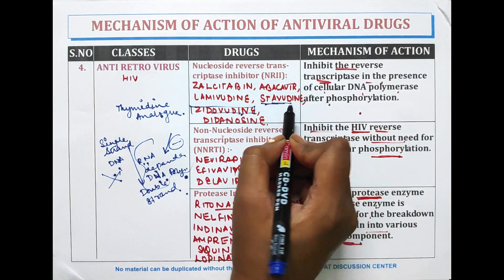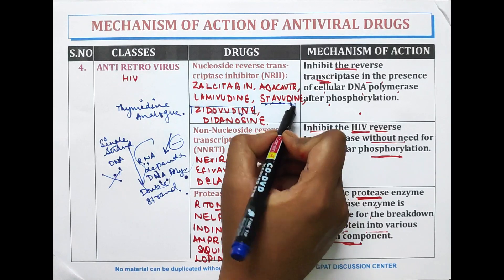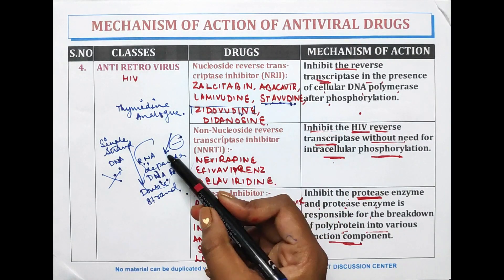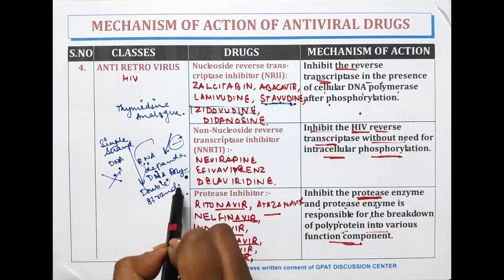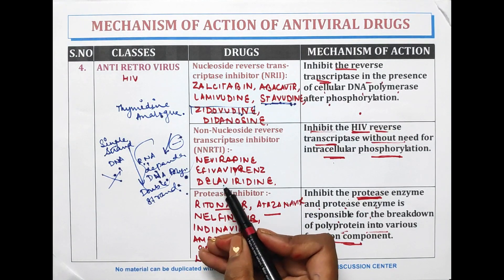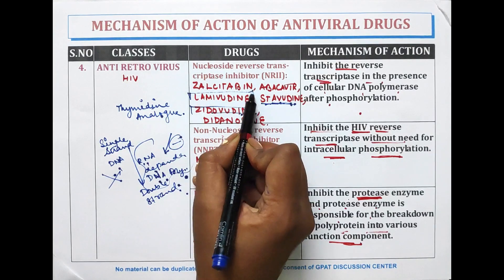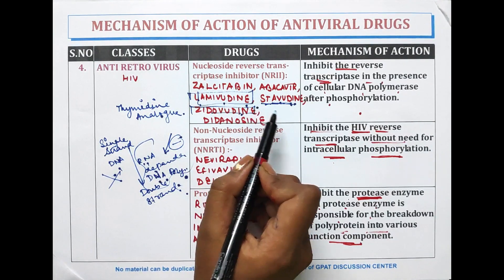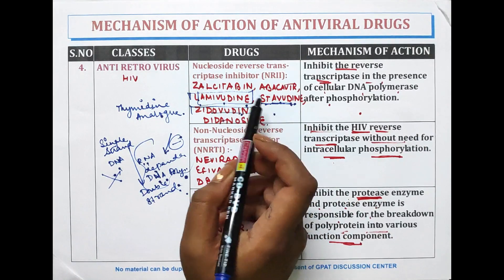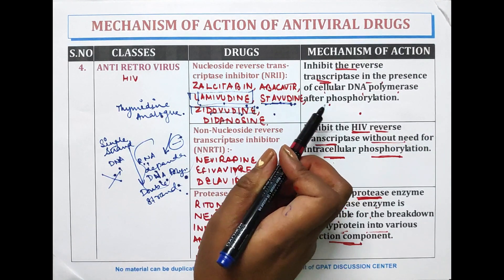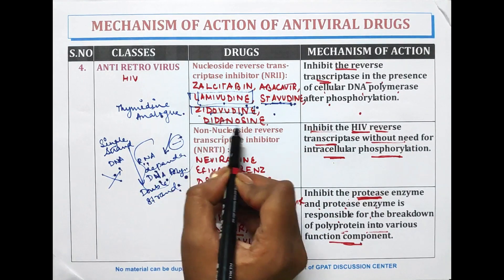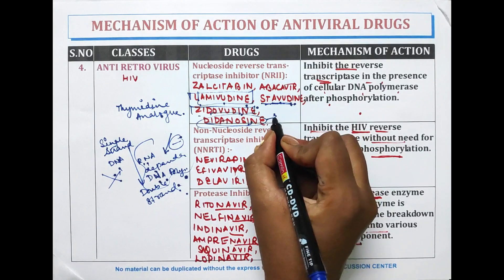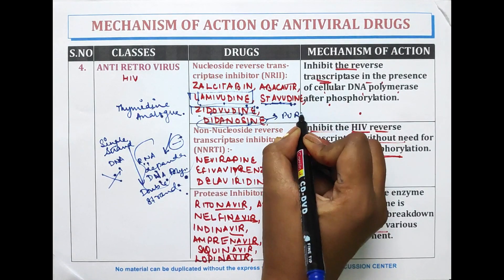Stavudine is also a thymidine analogue and its mode of action is similar to that of zidovudine. Lamivudine inhibits HIV reverse transcriptase as well as hepatitis B virus DNA polymerase. Didanosine is a purine analogue.